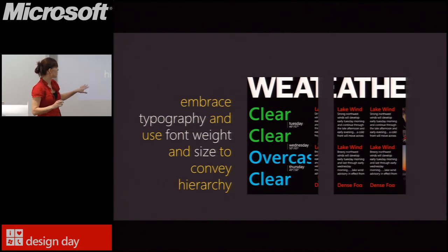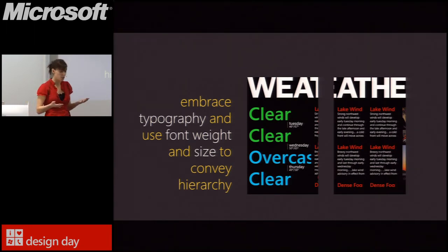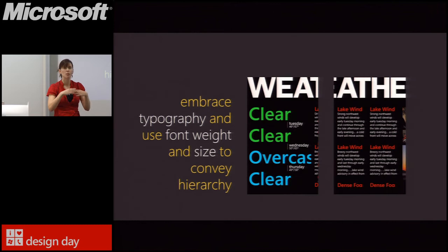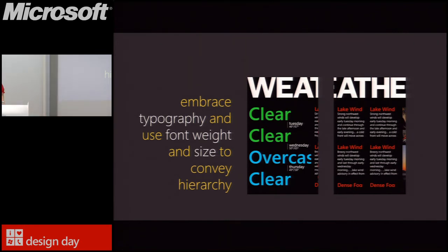Best practice one: embrace typography and use font weight and size to convey hierarchy in your interfaces. Core to the Metro design language is a celebration of typography. Working hand-in-hand with that are the principles of authentically digital and content-not-chrome. Most information in any application is textual — why unnecessarily decorate it with gradients and chrome and unnecessary graphics? Celebrate typography to make the interface beautiful and more meaningful. Let's go into Expression Blend to apply this.